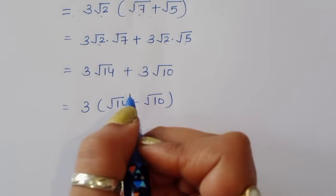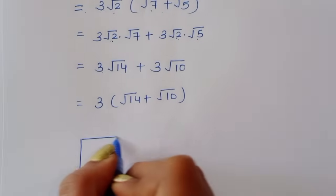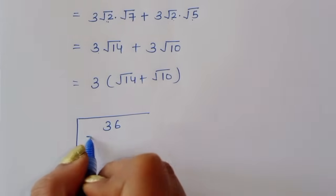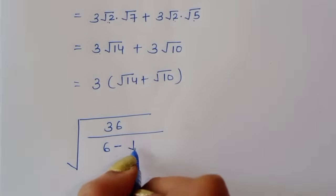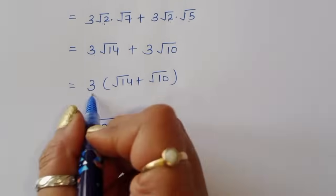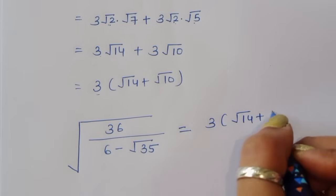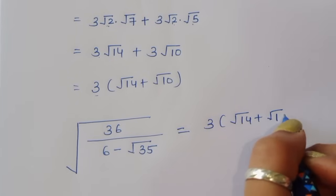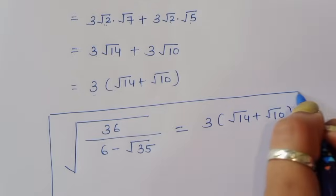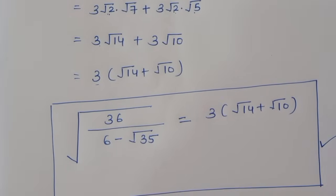So the value of square root of 36 divided by (6 minus square root of 35) is equal to 3 times (square root of 14 plus square root of 10). This is the solution. Thank you.